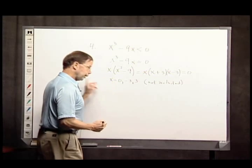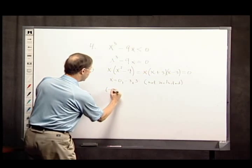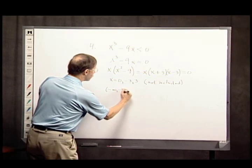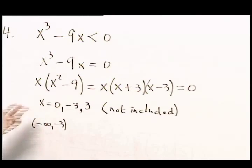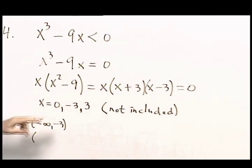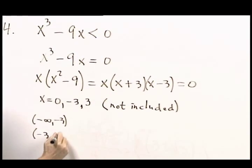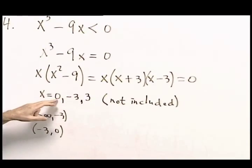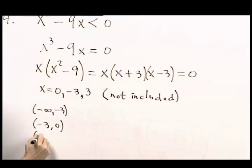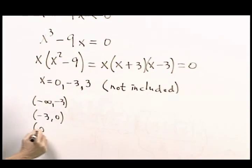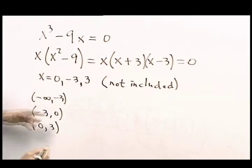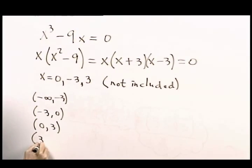There's an interval that goes from negative infinity up to negative 3. These are all the numbers that are less than negative 3. There's the interval between negative 3 and 0. There's the interval between 0 and 3. Notice I'm working my way from left to right on the number line. And then there are all the numbers that are bigger than 3.